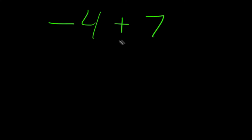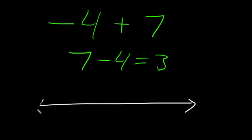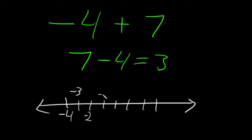Let's try a similar example: negative 4 plus 7. Like we saw before, we're allowed to swap the numbers — we have a positive 7, so we could say this is equal to 7 minus 4, which is 3. Let's check on the number line. Starting at negative 4 and moving 7 to the right — counting negative 3, negative 2, negative 1, 0, 1, 2, 3 — we get the same answer: 3.